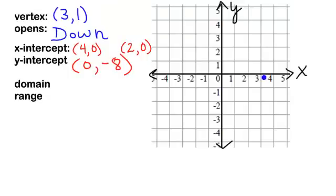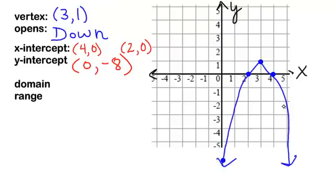We know that the vertex is at the point 3, 1. I know it opens down and I have an x-intercept at 4, 0 and at 2, 0. I have a y-intercept at 0, negative 8, which will be going off my graph a bit. And it does look like I have a parabola. Let's draw that parabola and find our domain.